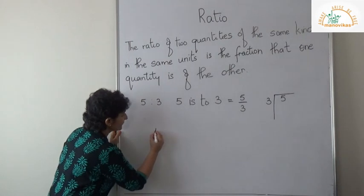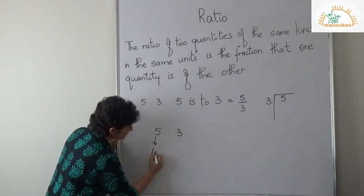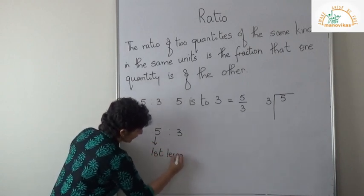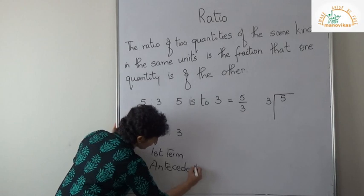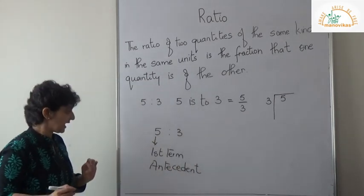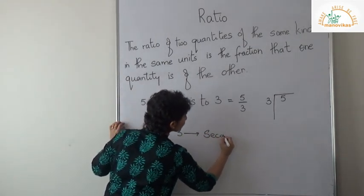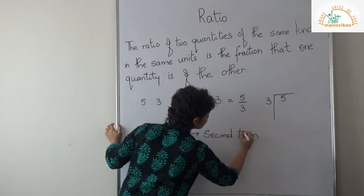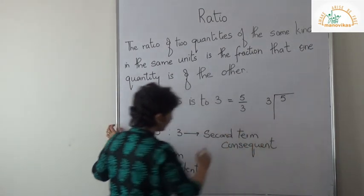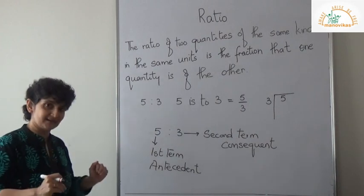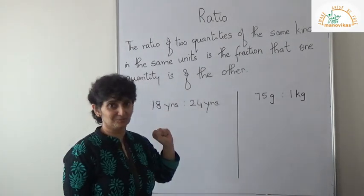In 5 is to 3, 5 is my first term and you call it the antecedent. This is your first term and it is called antecedent. 3 is your second term and we call it the consequent. Let me repeat: first term — antecedent; second term — consequent.